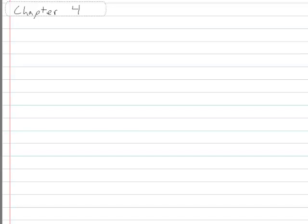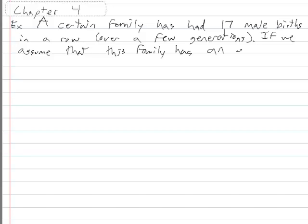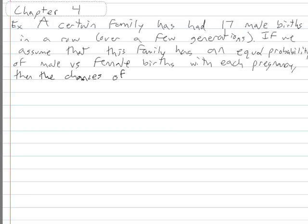We're going to take a look at basic concepts of probability — that's chapter four. Let's start with an example. A certain family has had 17 male births in a row over a few generations. Not one mother who had 17 boys, but over a few generations, only 17 males — uncles, nephews, and all of that. If we assume this family has an equal probability of male versus female births, the chances of this occurring are roughly 1 in 130,000.